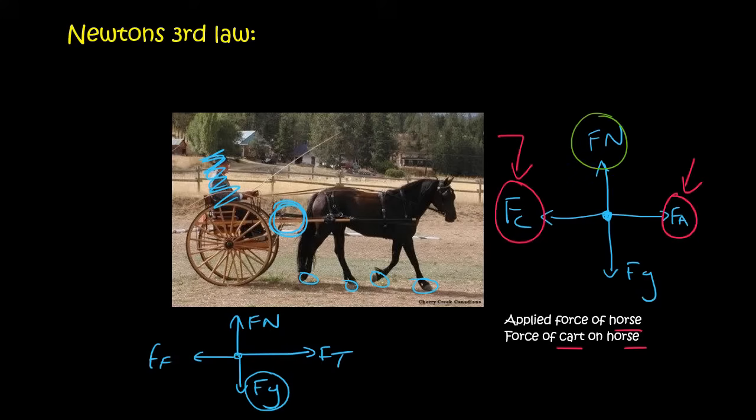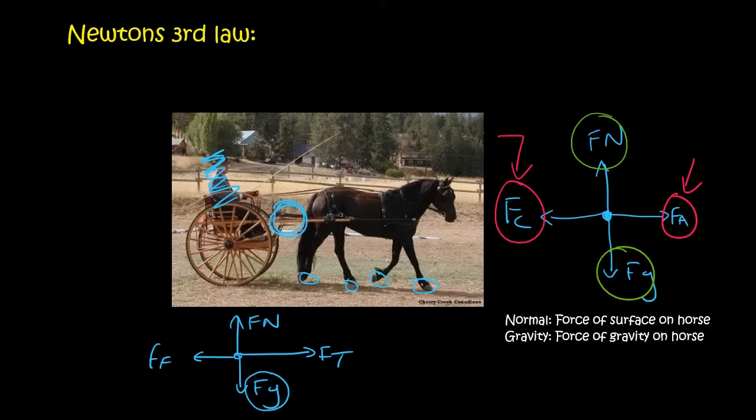The next one people say is the normal force and the force of gravity. The normal force is the force of the ground exerted on the horse. Gravity is the force of gravity on the horse. Both are acting on the horse. With a Newton's third law pair, it has to be two different objects exerting forces on each other.